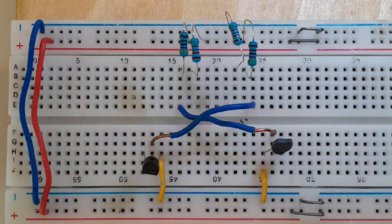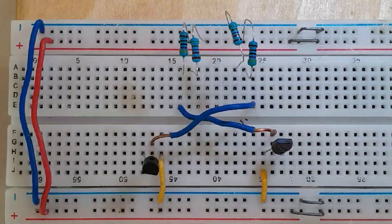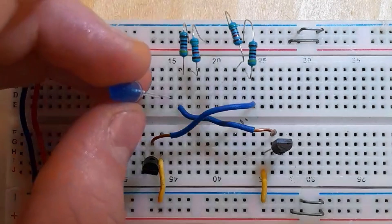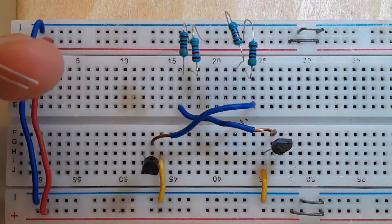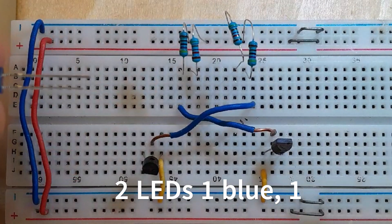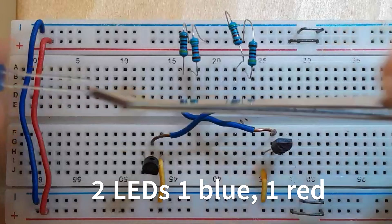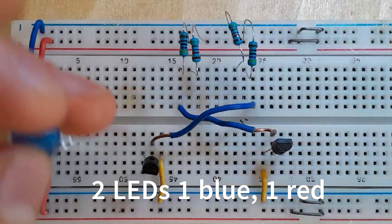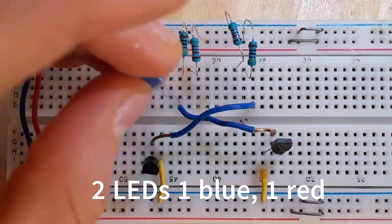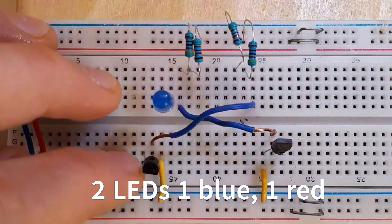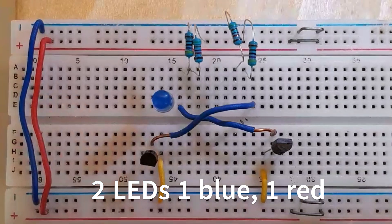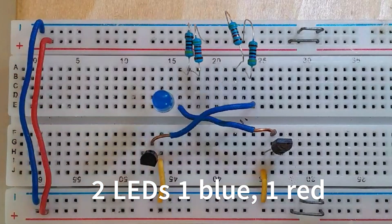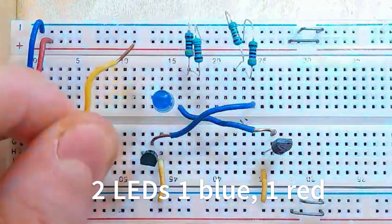Then you need to connect the LED. The cathode or the short leg, which is the negative, to the transistor collector pin like this.